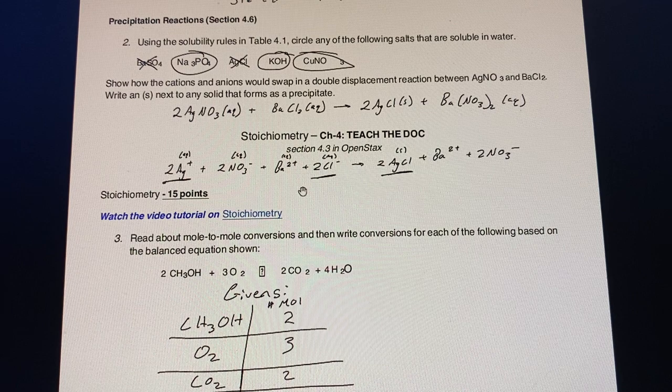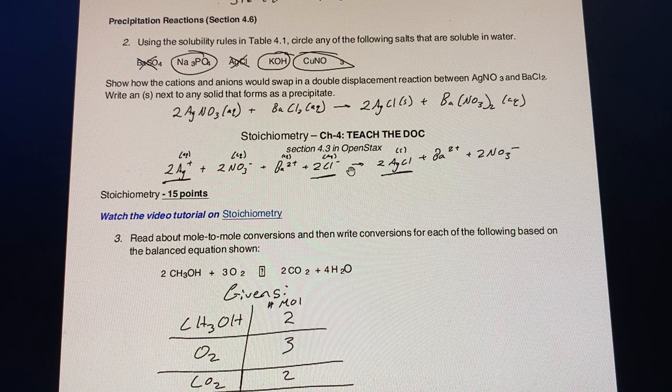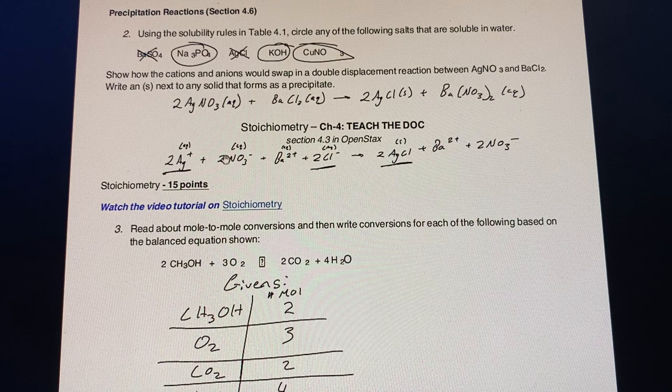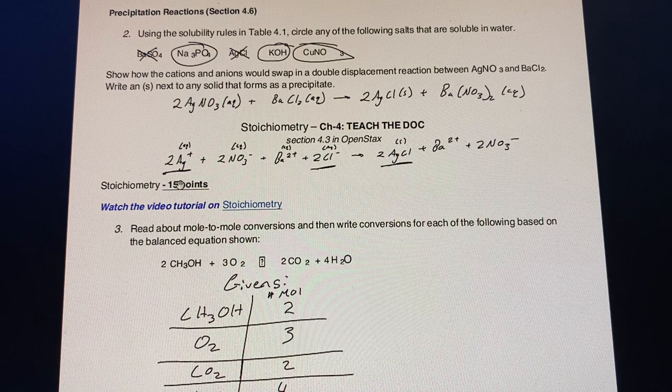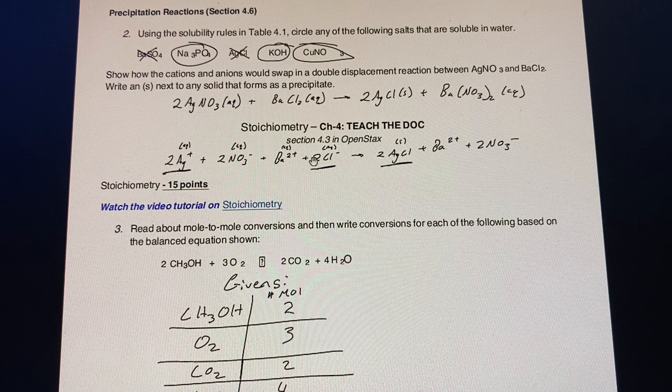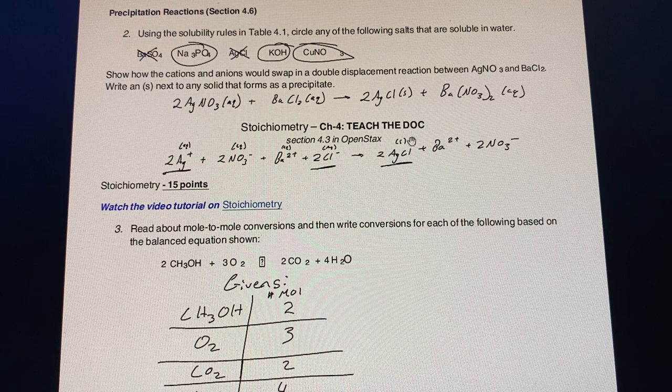We go to showing the cations and anions would swap in a double displacement reaction and showing this ionic equation. If we get down to it, we would go from the AgNO3 and the BaCl2, and it would eventually come down to 2Ag+ which is aqueous plus 2Cl- which is aqueous to the 2AgCl which is the solid.